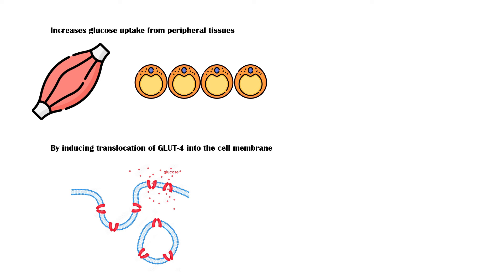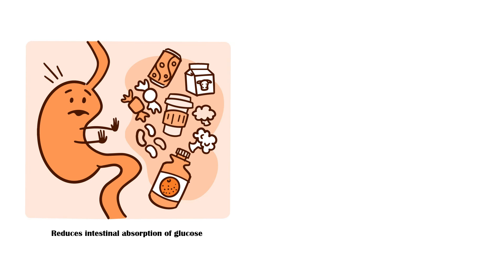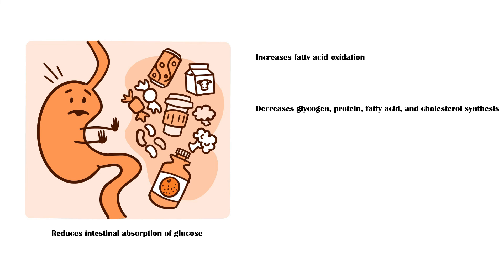In addition to these two mechanisms, metformin also reduces the intestinal absorption of glucose, which further reduces blood glucose levels. Furthermore, metformin increases the oxidation of fatty acids, decreases glycogen, protein, fatty acids, and cholesterol synthesis, and reduces LDL levels while increasing HDL, which significantly lowers the cardiovascular risk in patients with type 2 diabetes.